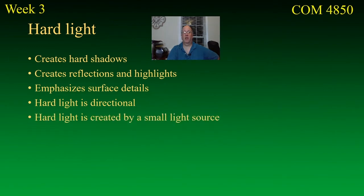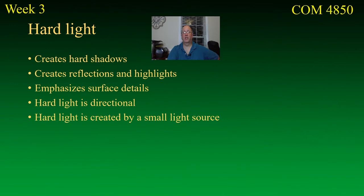A hard light is created by a small light source. You might think of the sun as a very large light source — it actually is, many times the size of the Earth — but it's also 93 million miles away. So the sun appears very small from here, creating a small point source of light in the sky, and that creates those hard shadows on a sunny day.